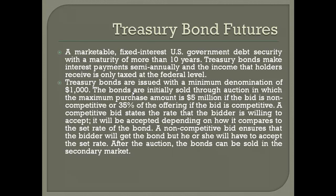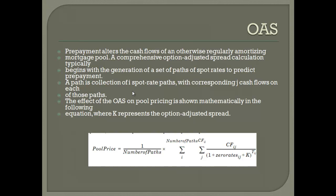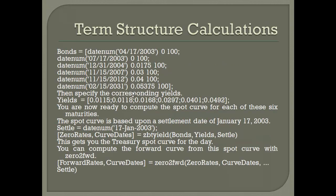Treasury bond futures and forwards allow computation of forward rates for a quarter or one year of US treasuries, useful in pension computations. You can also explore collateralized debt obligations using the toolbox.